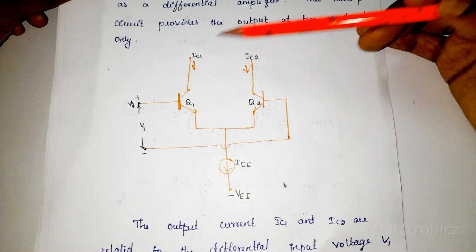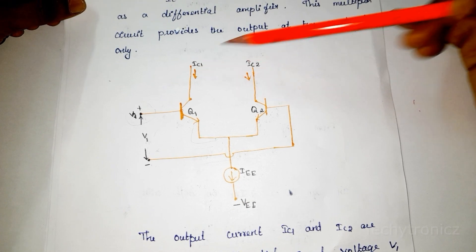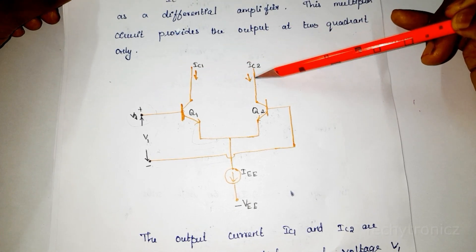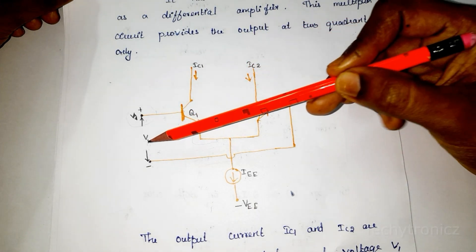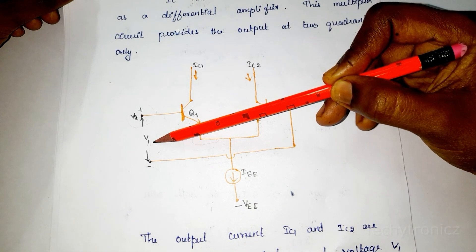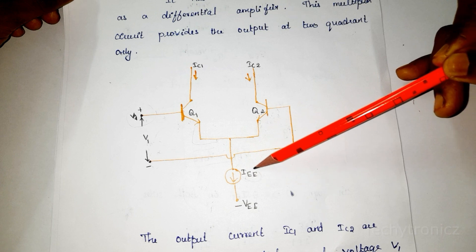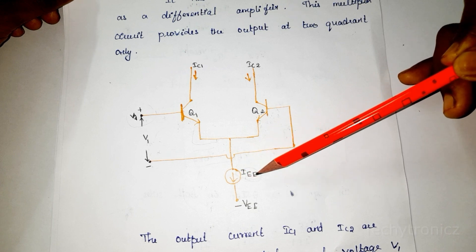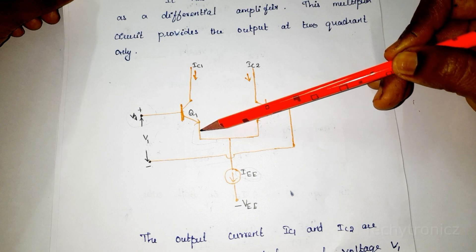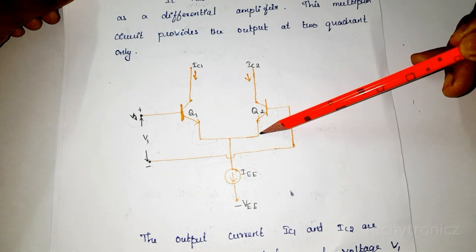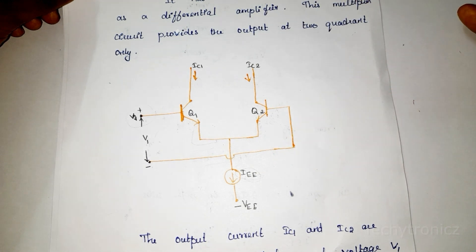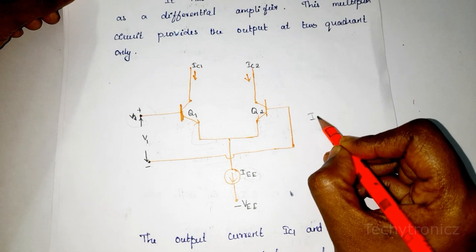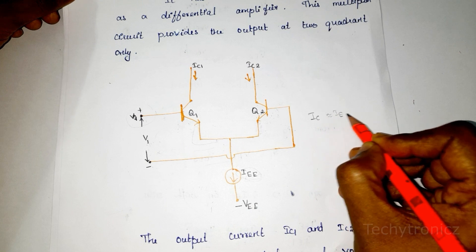From the diagram, the collector currents IC1 and IC2 are related to the differential input voltage V1. We are going to write the value of IEE, which is the total current equal to emitter current IE1 plus emitter current IE2, that is IEE equals IEE1 plus IEE2. We can say that collector current is approximately equal to emitter current.